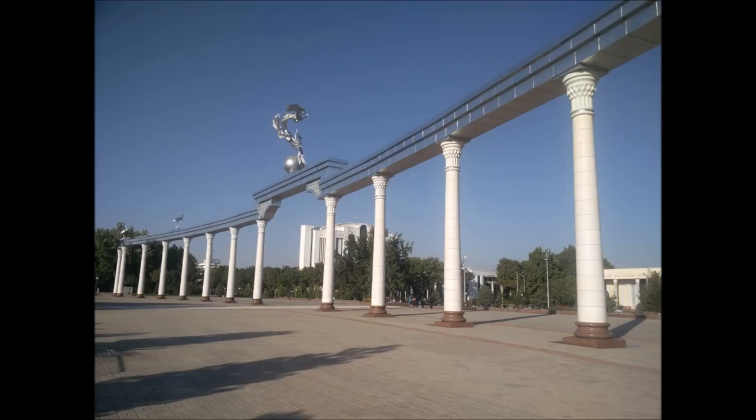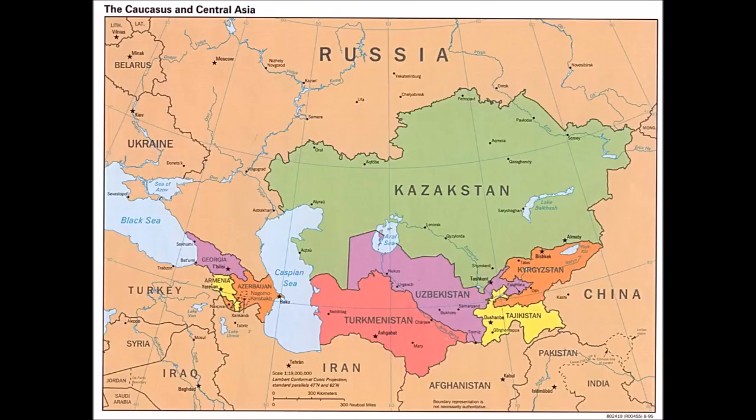Uzbekistan — officially the Republic of Uzbekistan — is a doubly landlocked sovereign state in Central Asia. It is a secular, unitary constitutional republic comprising 12 provinces, one autonomous republic, and a capital city. Uzbekistan is bordered by five landlocked countries: Kazakhstan to the north, Kyrgyzstan to the northeast, Tajikistan to the southeast, Afghanistan to the south, and Turkmenistan to the southwest.